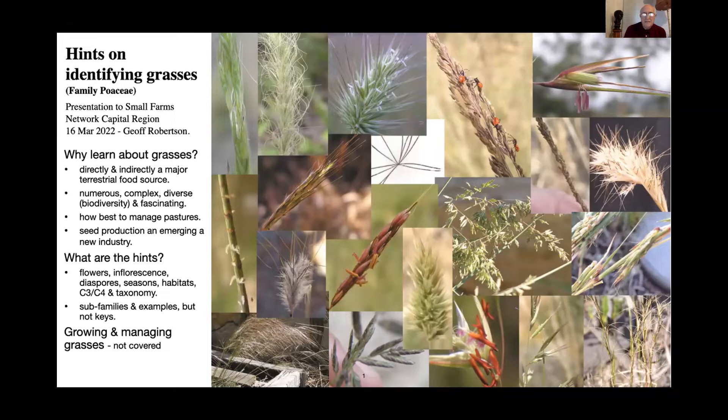We'll also look at different seasons, since grasses obviously have a seasonal pattern. Habitats too — some grasses like wet areas, some like dry. We'll touch on C3 and C4, which a lot of you will have heard about, and then just a general thing on taxonomy which looks a bit complex but is something worth knowing about.